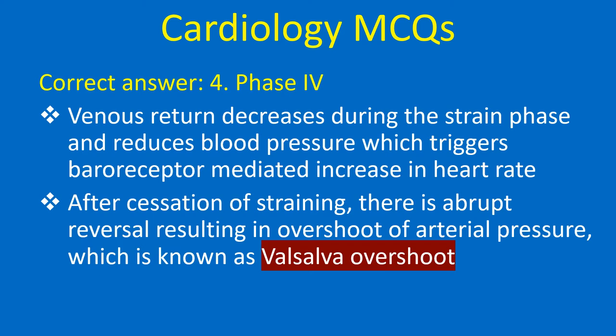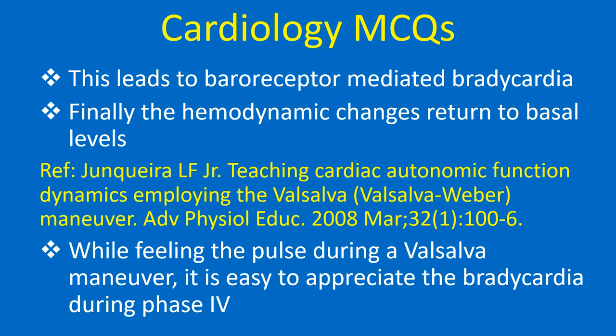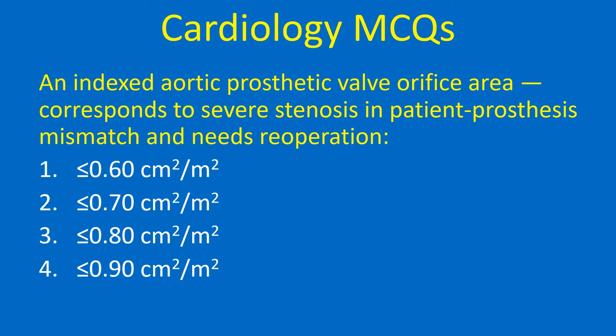Bradycardia in which phase of the Valsalva manoeuvre can be most easily appreciated by feeling the pulse? Correct answer: Phase 4. Venous return decreases during the strain phase and reduces blood pressure, which triggers baroreceptor-mediated increase in heart rate. After cessation of straining, there is an abrupt reversal resulting in overshoot of arterial pressure — known as Valsalva overshoot — which leads to baroreceptor-mediated bradycardia. The hemodynamic changes then return to basal levels. While feeling the pulse during a Valsalva manoeuvre, it is easy to appreciate the bradycardia during phase 4.